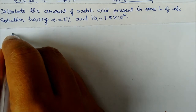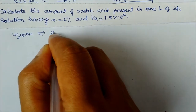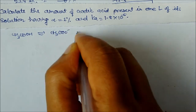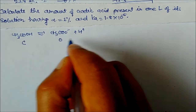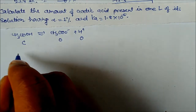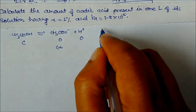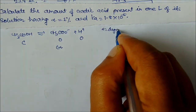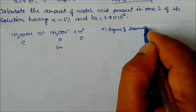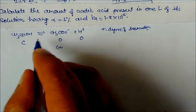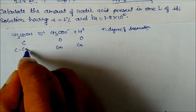So we write CH₃COOH undergoing dissociation into CH₃COO⁻ and H⁺. The initial concentration is C and zero for the ions. After equilibrium, the final concentrations will be C·α for the ions and C minus C·α for the undissociated acid, where alpha is the degree of dissociation — meaning how much of the substance has dissociated.